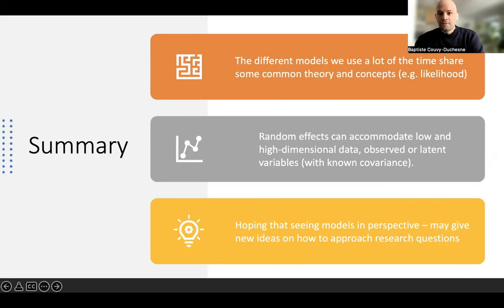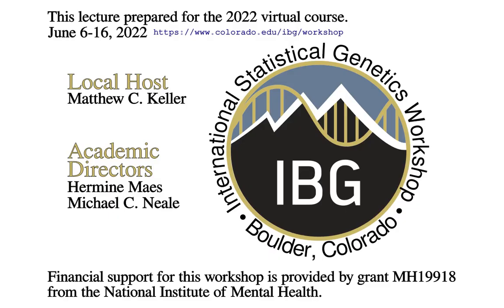So thank you very much for your attention throughout all these presentations. I'd like to just finish on a very quick summary, just to emphasize the fact that the different models we use a lot of the time share some common theory and concepts, namely the likelihood, which allows for testing, but allows seeing all of these as complex part of the same family of models. Just to keep in mind, random effects models can accommodate low and high dimensional data observed or latent variables, as long as you know the known variance covariance. And I hope that seeing all these models in perspective can help you or can give you new ideas about how to approach research questions or develop new methods. Thank you very much for your attention.